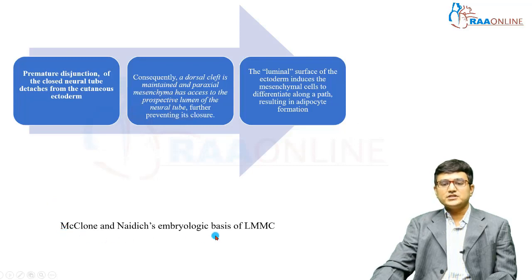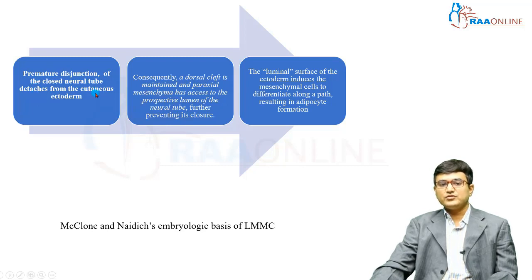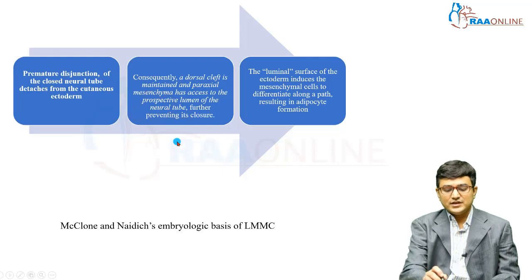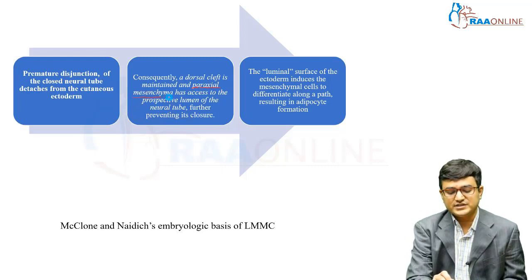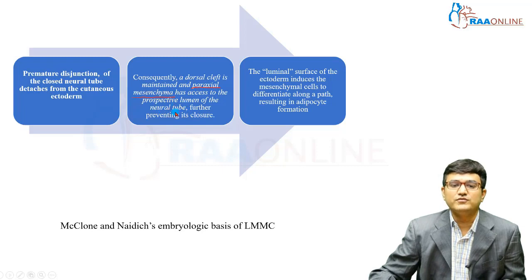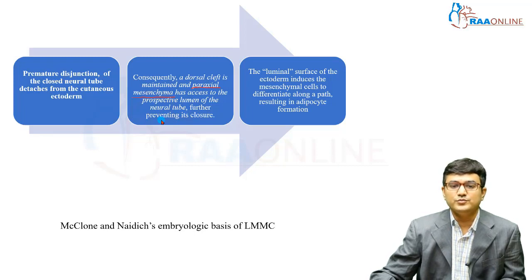Meclone and colleagues proposed an embryological basis for lipomyelomeningocele, suggesting that premature disjunction of the closed neural tube — after primary neurulation — from the cutaneous ectoderm is the primary problem. This premature disjunction creates a dorsal cleft, which permits paraxial mesenchyme to gain access to the lumen of the neural tube. This entry of paraxial mesenchyme prevents complete closure of the neural tube and leads to the development of lipomyelomeningocele.